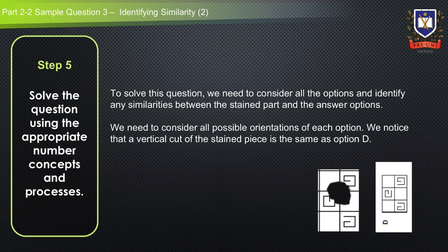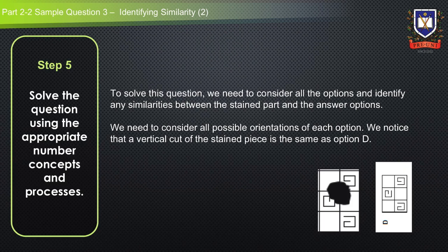We notice that the vertical cut of the stain piece matches option D when rotated. This is again the use of the process of elimination — we need to identify similarities in the pattern pieces with each answer option, and it's important to be able to change the orientation of the answer options to identify similarities.